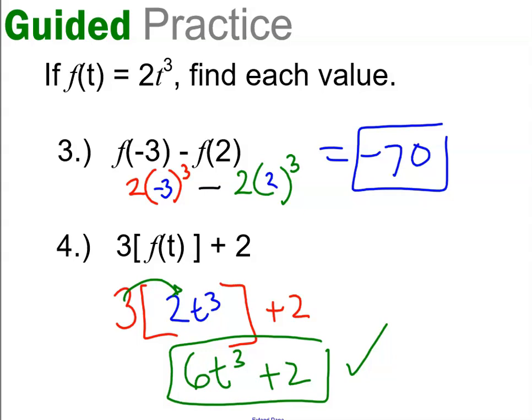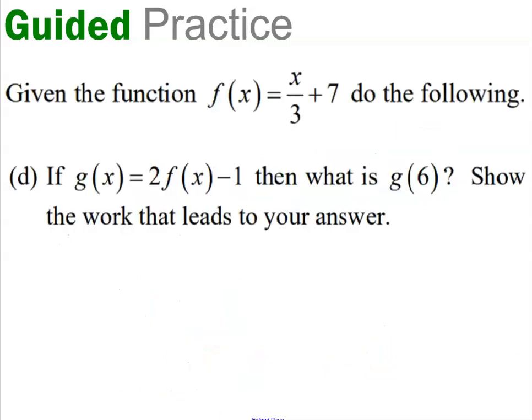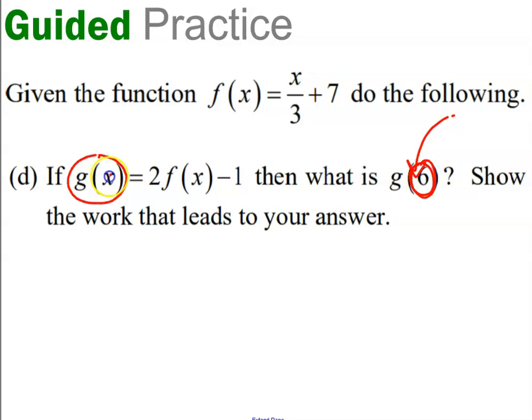If you'd really like a challenge, keep on listening. Here's my last example. Going back to the function we worked with earlier called f of x, which divides input by 3 and adds 7. What would happen if I asked you to create a new function called g of x? The rule for g of x is: double whatever the answer to f of x is, and then take away 1. So if my input is going to be 6, that means anywhere I see the letter x I'm going to put a 6. Here's my function g, and the x is right here, so I'm going to put a 6 right here.